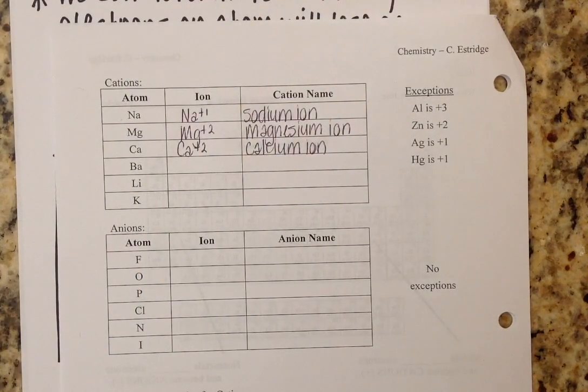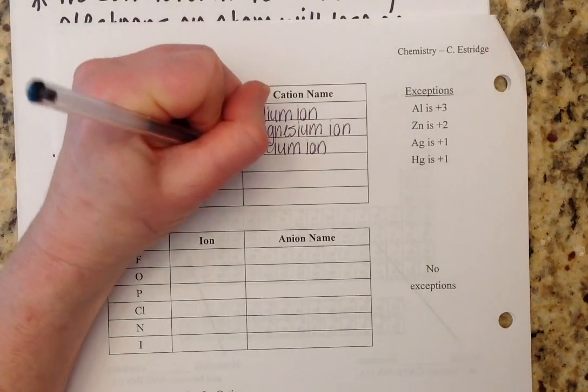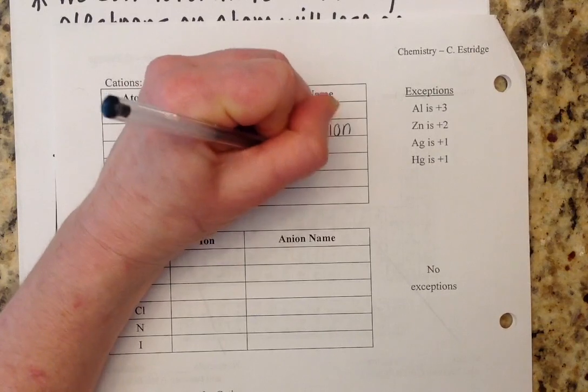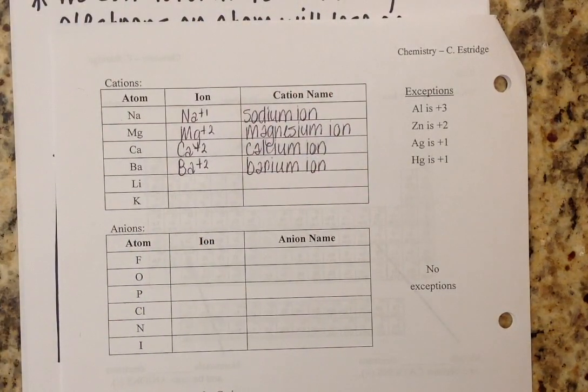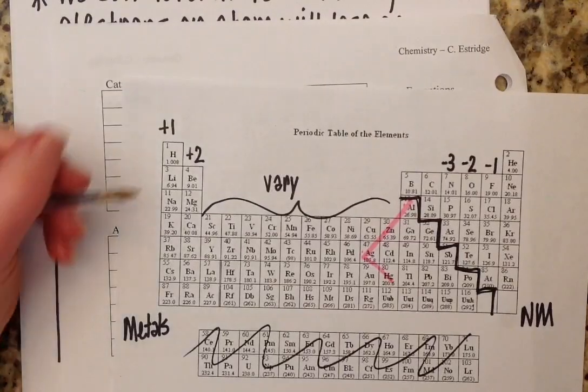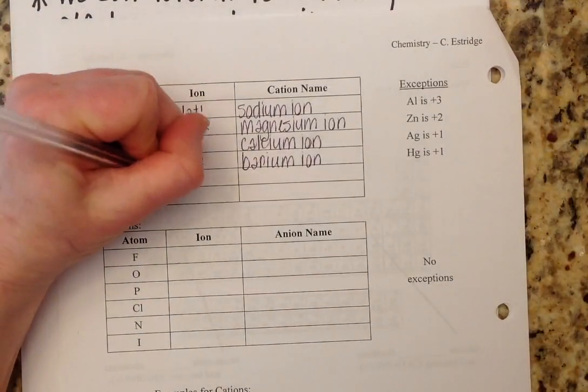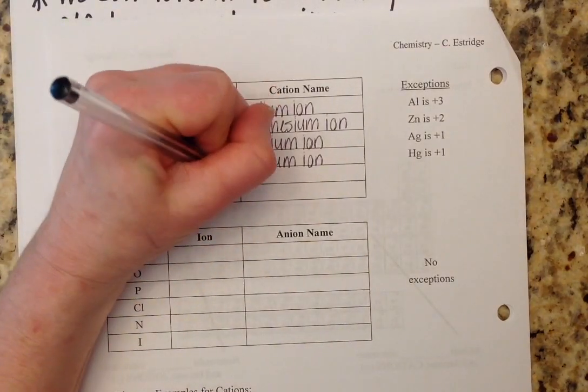Barium is also in column two. Therefore, it has a plus two charge. And we would refer to this as the barium ion. Lithium is in column one. Therefore, it will have a plus one charge. And we refer to this as the lithium ion.